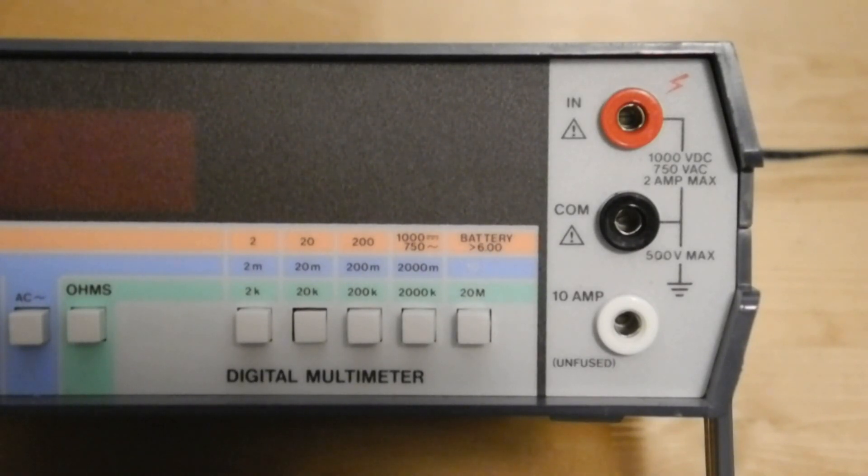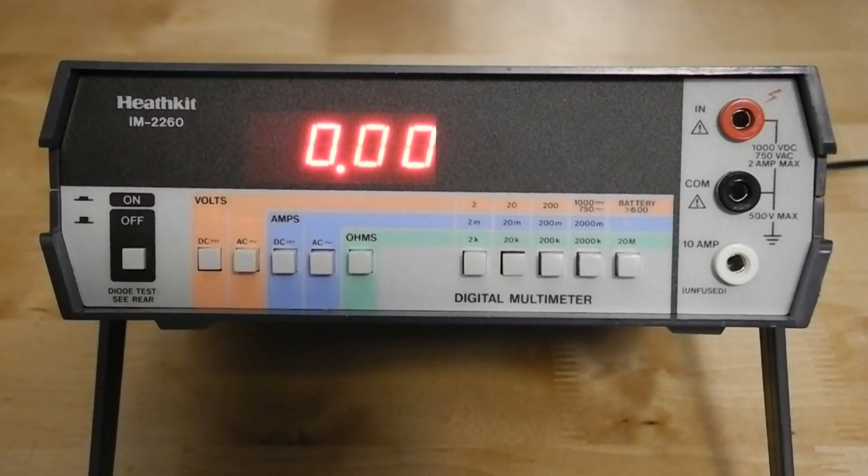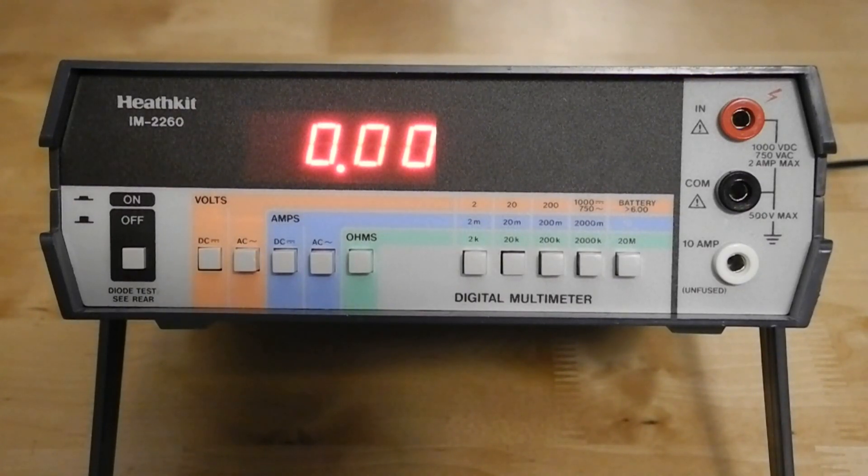The unit is floating with respect to ground and rated safe to be referenced up to 500 volts DC from ground. It features a 3.5-digit, 0.43-inch, red, 7-segment LED display.